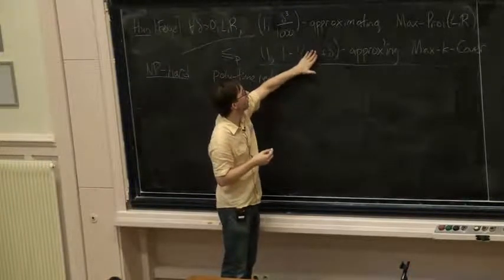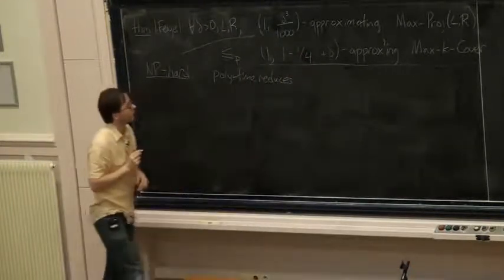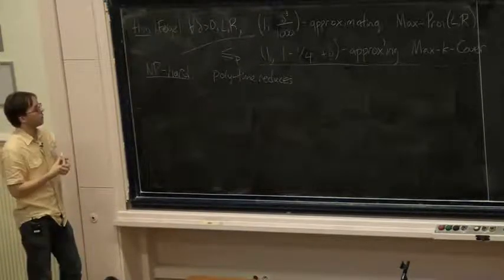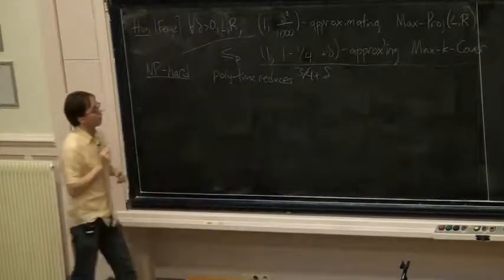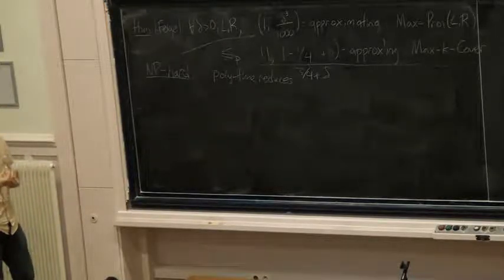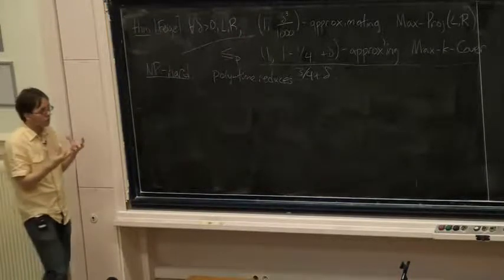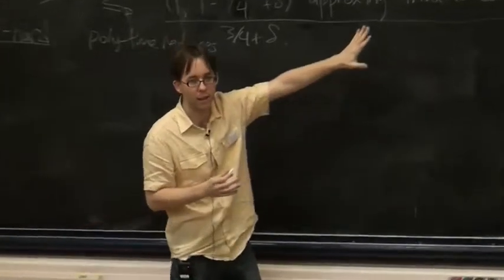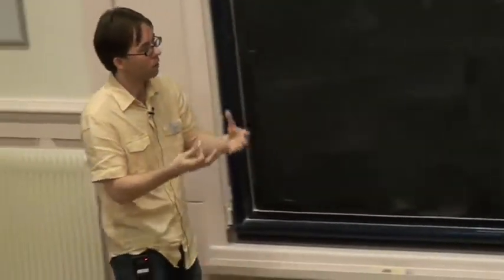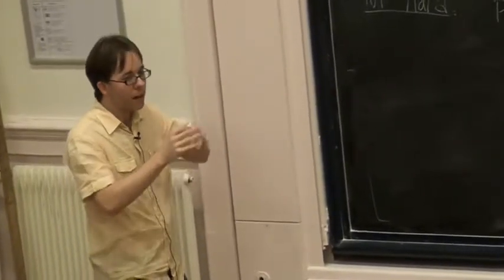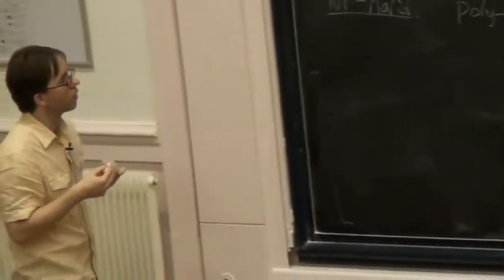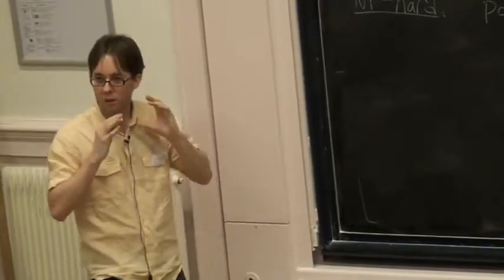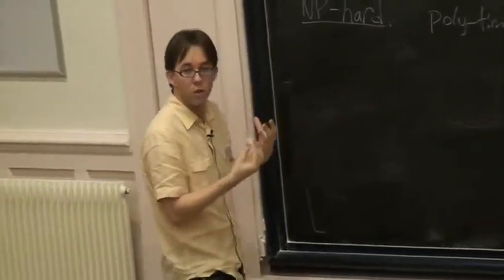Instead of proving (1 − 1/e), I'm going to prove hardness for (1 − 1/4) = 3/4 here, which hopefully will more or less satisfy us. So the threshold becomes 3/4 instead. We'll do this by the same gadget method used for NP-hardness results — construct a particular finite-sized instance of Max K-Cover, then combine it with the edge constraints by gluing it onto each edge constraint of the given Max Projection instance.